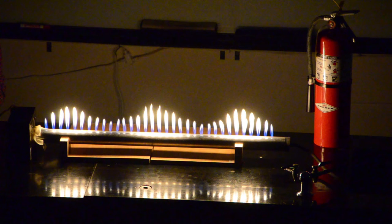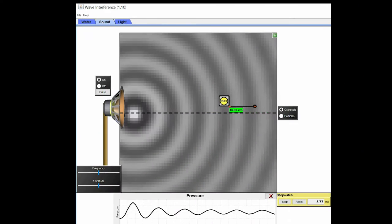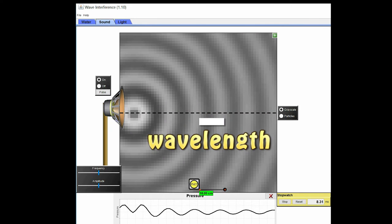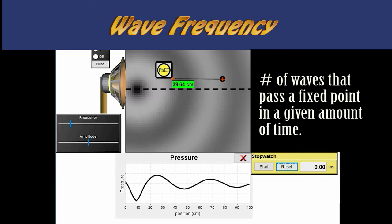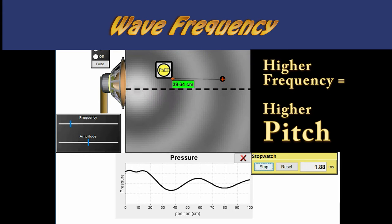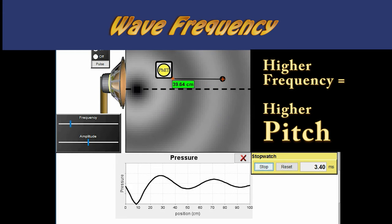As we increase the sound frequency, we create more nodes — more regions of alternating high and low pressure gas inside of the tube. As we increase the frequency, we shorten the wavelength. The distance between one high pressure region and the next high pressure region is called the wavelength. Frequency is just a word that means how often something happens. In the case of sound waves, that something is a repeating change in pressure from higher to lower pressure and then back up to higher pressure again. The more quickly these changes occur, the higher the sound frequency.